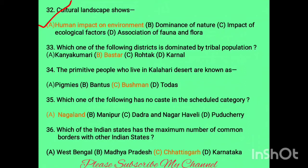Question thirty-three: which district is dominated by tribal population? That is the Bastar region. Question thirty-four: the primitive population who lived in the Kalahari district is known as the Bushman. Question thirty-five: which of the following has no caste in the schedule category? The answer is Nagaland — according to census data, there is no scheduled caste population in Nagaland.